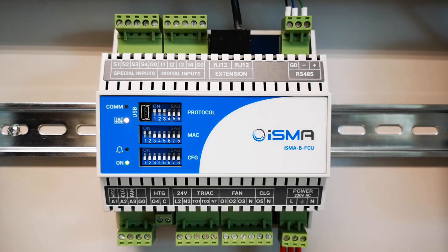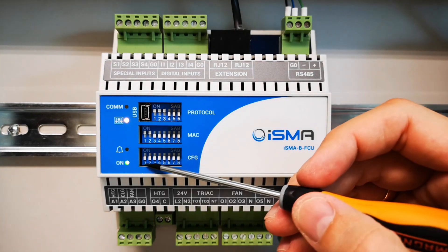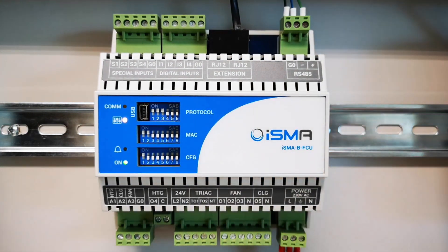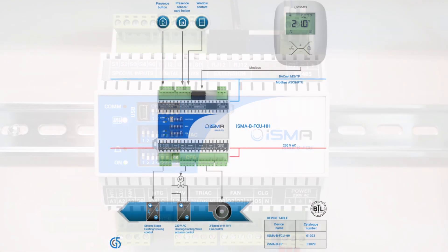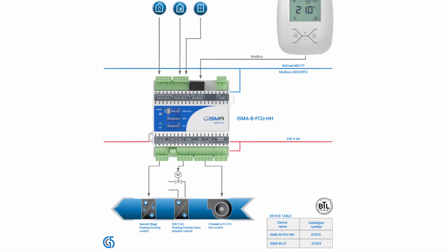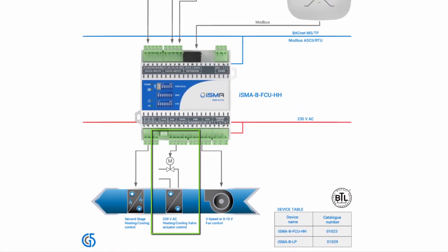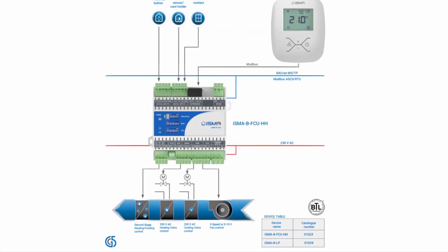The first DIP switch selects the fan coil unit type between a 2-pipe and 4-pipe water system. In case of 2-pipe, a single supply of water is available at the FCU — this may be either hot or cold water depending on the season.